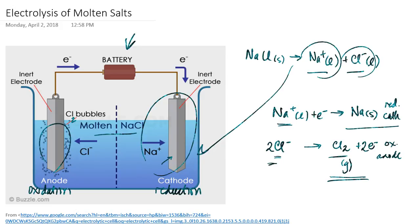Since the anode reflects the oxidation process and oxidation is the loss of electrons, electrons would travel away from the anode towards the battery. Since the electrons are going to travel through the battery, this end of the battery must be the positive end to attract the negatively charged electrons. Once they exit the battery, the electrons would then travel towards the cathode, meaning the opposite end of the battery must be the negatively charged end.